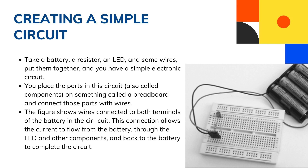To create a simple circuit, you'll need a battery, a resistor, an LED, and some wires to put them together. That's all an electronic circuit is — wires connecting components so that a current can flow through the components and back to the source. As shown in the figure, you place the components on something called a breadboard and connect those parts with wires. A breadboard has slots for you to insert electronic components to build a sample circuit.